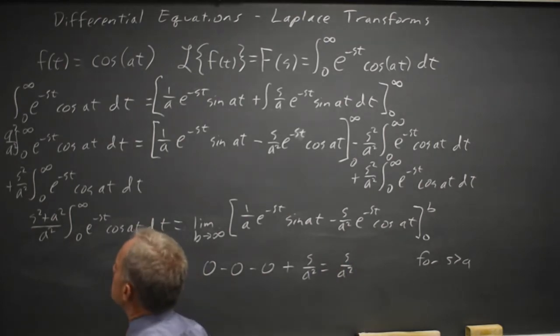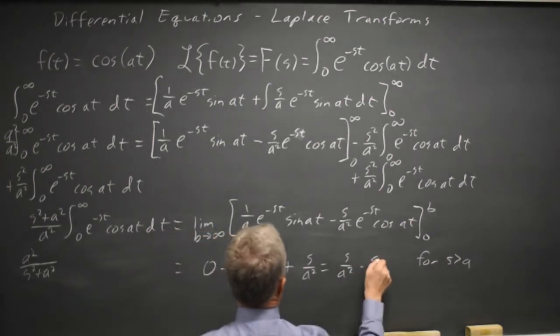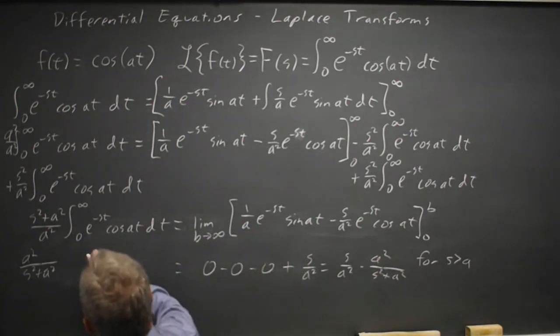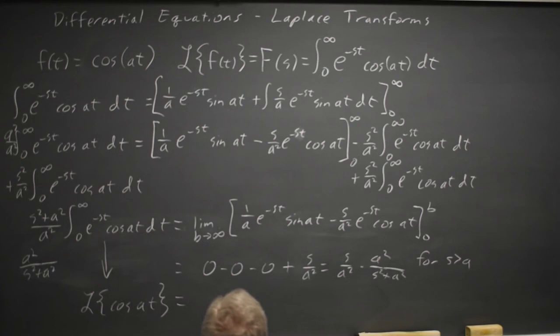On the left, if I multiply by a squared over s squared plus a squared, and do the same on the right, all I have left is this integral, which is the Laplace transform of cosine a t. This is the definition of the Laplace transform. And on the right, a squared over a squared is one, so I'm left with s over s squared plus a squared for s greater than a.